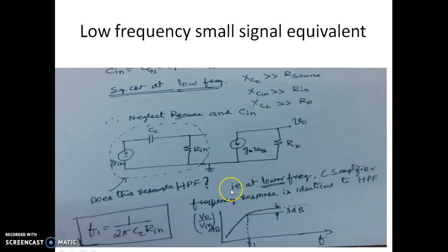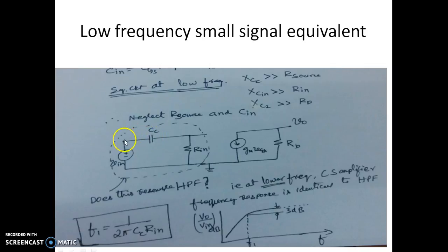Now we will see how the circuit is modified at low frequencies. At low frequencies, the capacitance will offer very high impedance. Because the impedance offered by the capacitors is large, we can see Rs is present here, but since the impedance offered by Cc is far greater than Rs, we are not considering Rs.